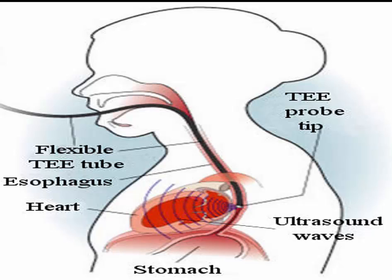Transesophageal echocardiography, also known as a TEE, provides a clear image because there is less tissue for sound waves to pass through. The probe is placed into the mouth and then down the esophagus. It can also be placed in the stomach, and the patient lies on their left side.